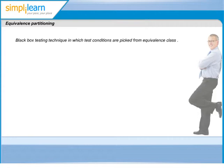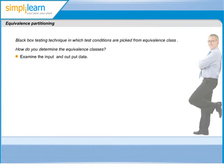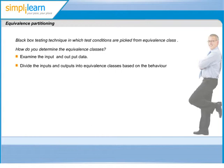If we are supposed to get an error while testing a condition with certain input from a class, then the system should get the same error for all other inputs from the same class. The first step towards implementation is to examine the input and output, and divide the inputs and outputs into equivalence classes based on the behavior. Inputs can be valid or positive scenarios and invalid or negative scenarios. Following are some general guidelines for identifying equivalence classes.